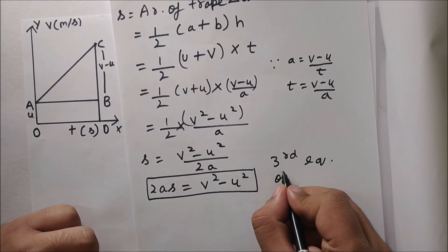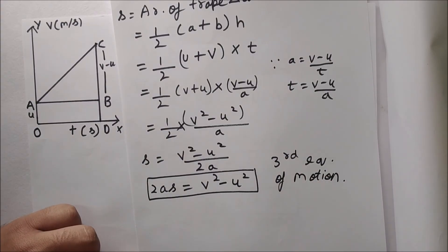Now 2a will go to LHS and 2as equals to v square minus u square. So that's the third equation of motion and we have derived. Thank you for watching the video. I hope you liked the video and your concepts would be clear. Make sure you subscribe to my channel, hit the like button if you got any benefit, comment down below on which more topics should I make videos. Thank you for watching, bye.